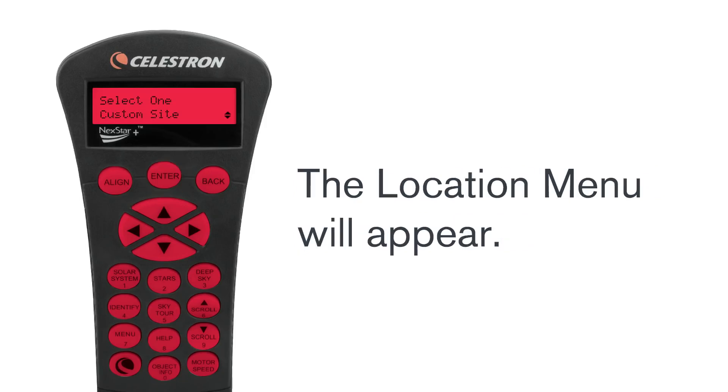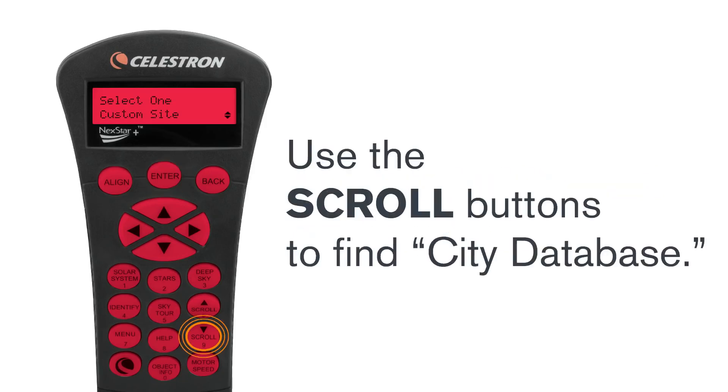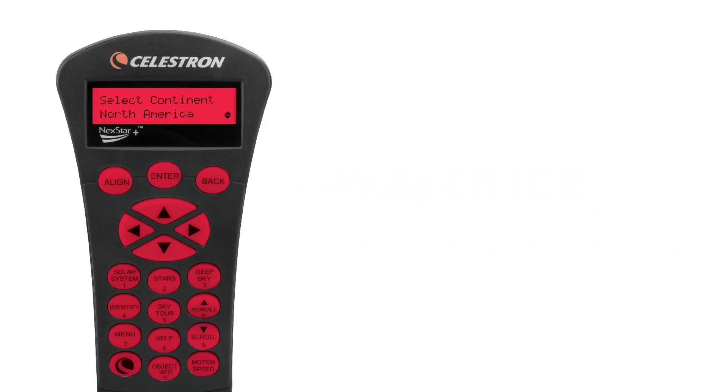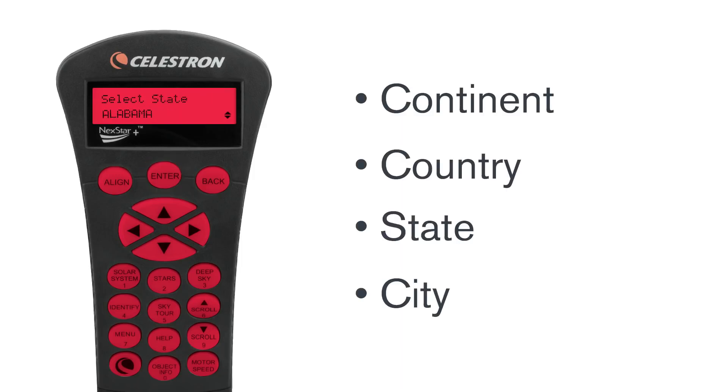The location menu will appear. Use the scroll buttons to find city database and press enter. Select your continent, country, state, and closest city from the list. Press enter after each selection.